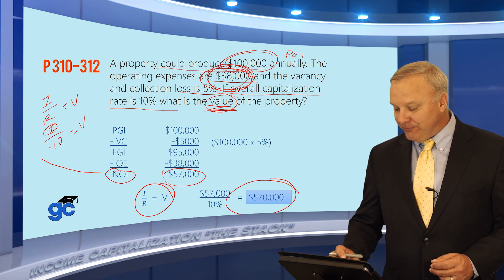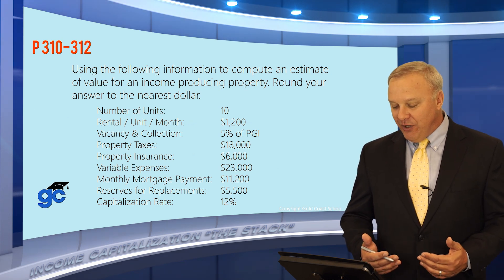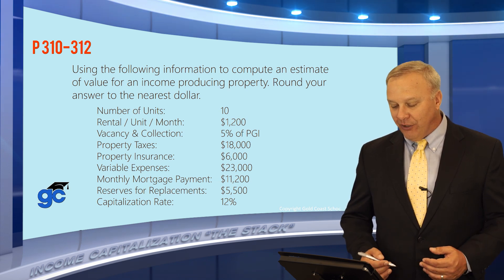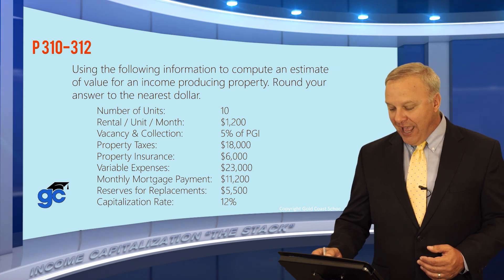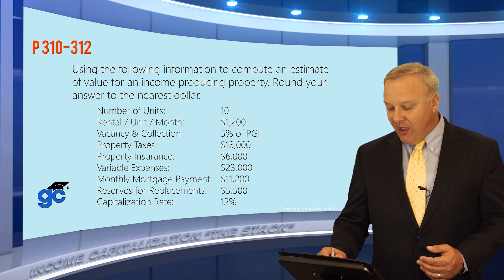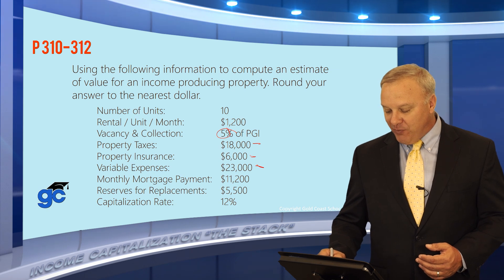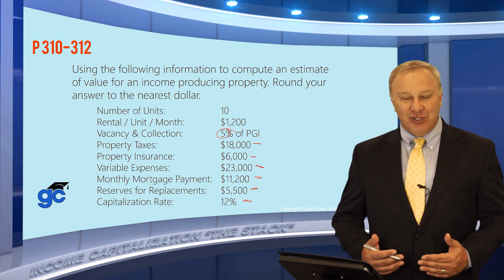Let's do another one. This question says: using the following information, compute an estimate of value for an income-producing property, rounded to the nearest dollar. There are 10 units, rental per unit per month is $1,200, vacancy and collection losses are 5%, property taxes $18,000, property insurance $6,000, variable expenses $23,000, monthly mortgage payments $11,200, reserve for replacements $5,500, and the cap rate is 12%.